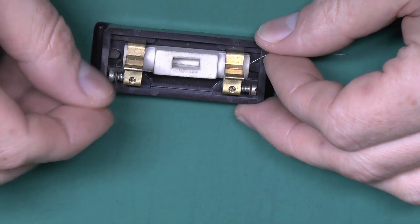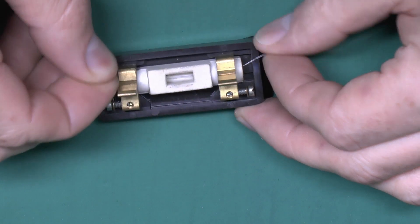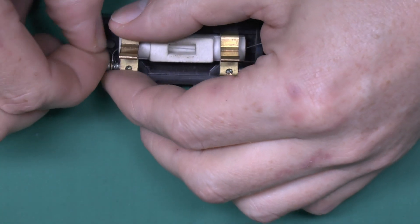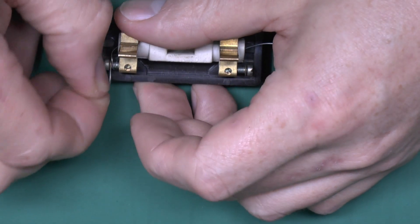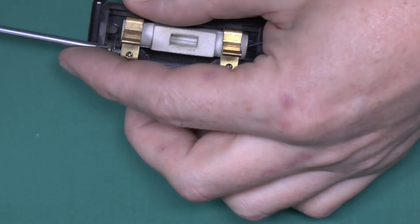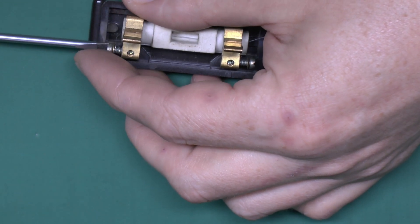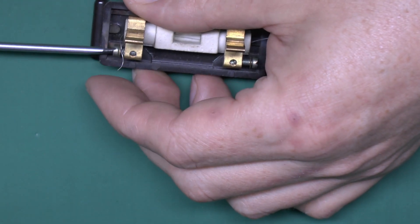And then it's just a matter of putting the wire around the screw at each end. So we'll just wind that around there and then just tighten up the screw so it holds the wire securely in place.